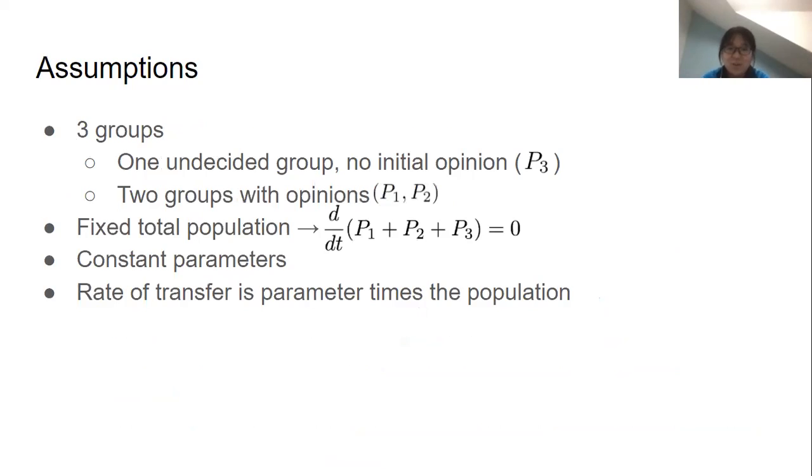There are four main assumptions we made to construct our model. First, we defined there are three different groups of population, one of which is opinionless initially and we denote it as P3. We define there are two other population groups with an initial opinion, and they could either represent completely different opinions or just different levels of agreement on the same opinion.